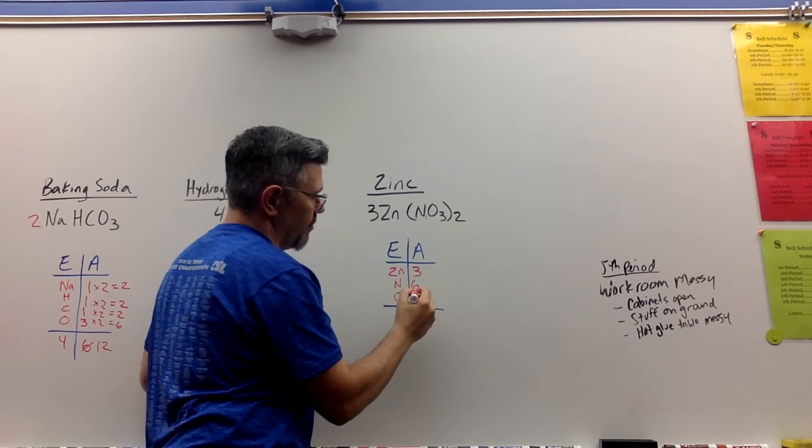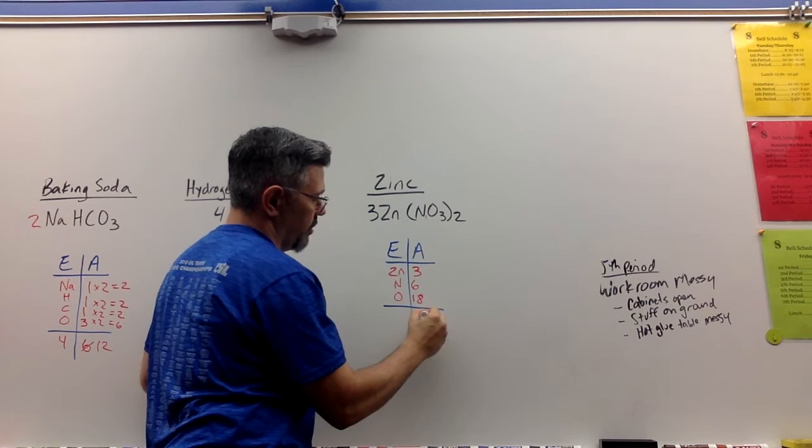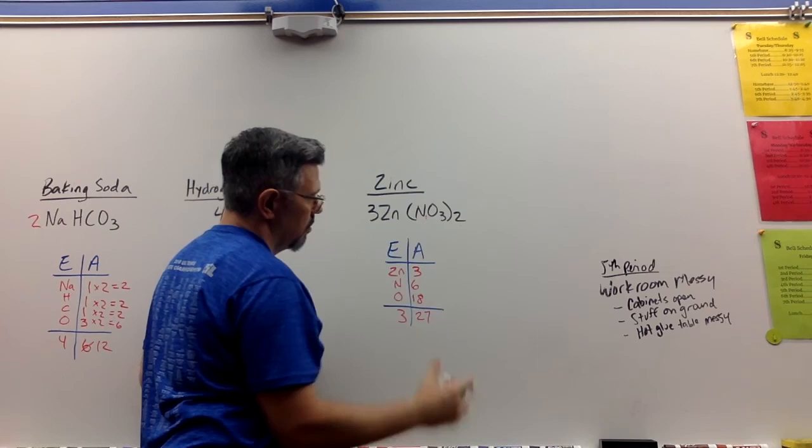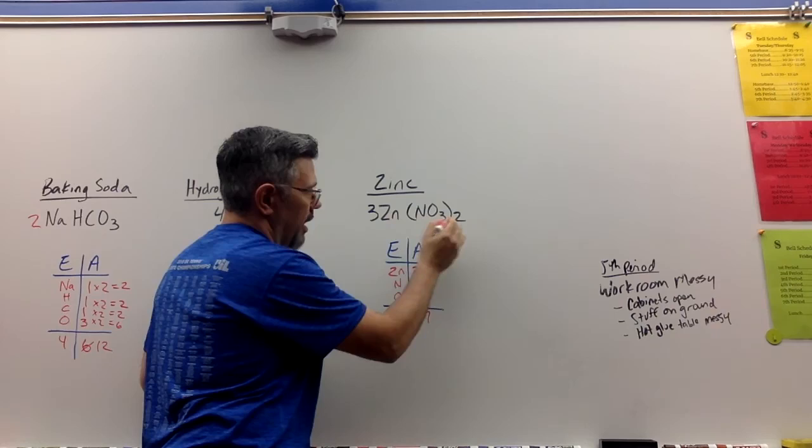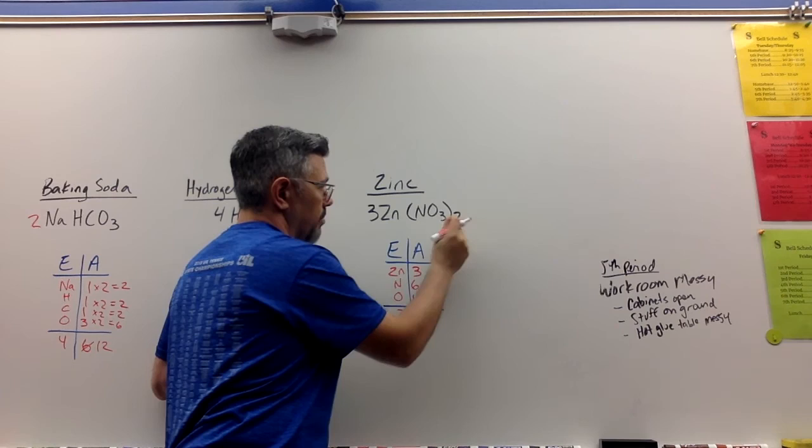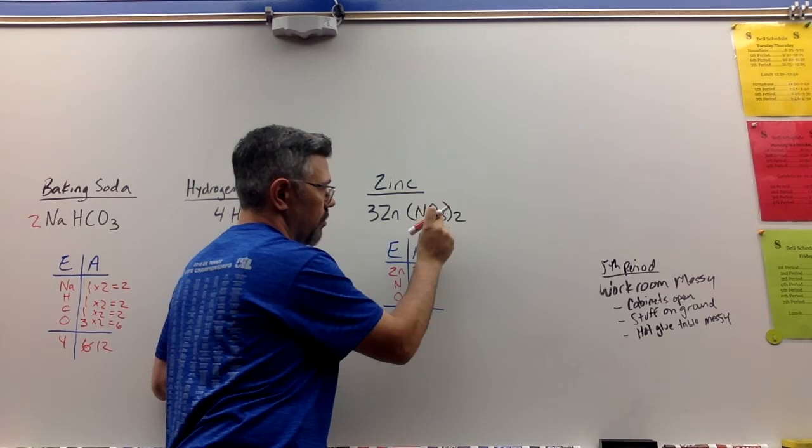So 18, 24, 25, 26, 27, and three. So once again, that is how you would break down a formula that actually had a parentheses in here. And so always remember that if you have a subscript attached to the parentheses, that subscript goes to each element within the parentheses.